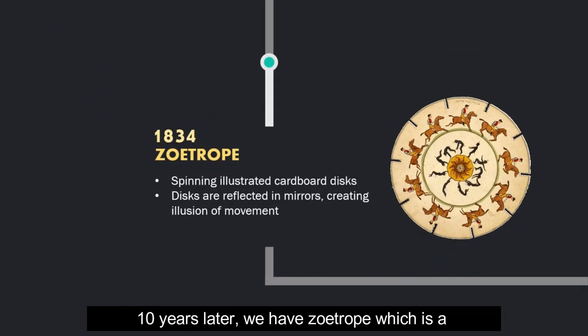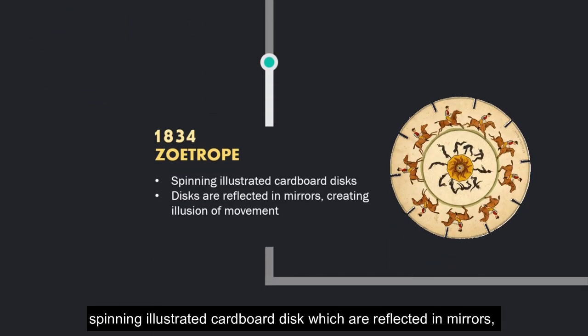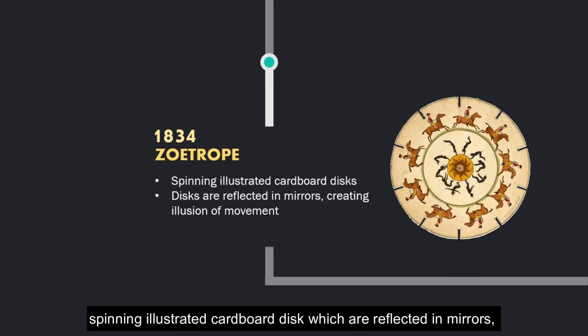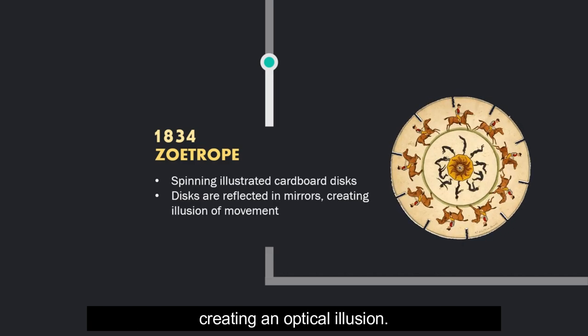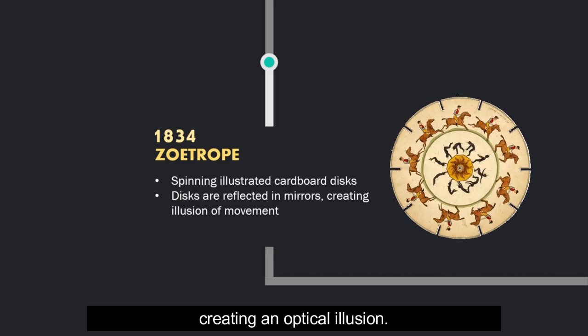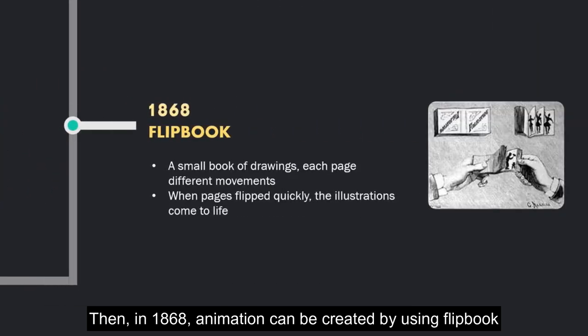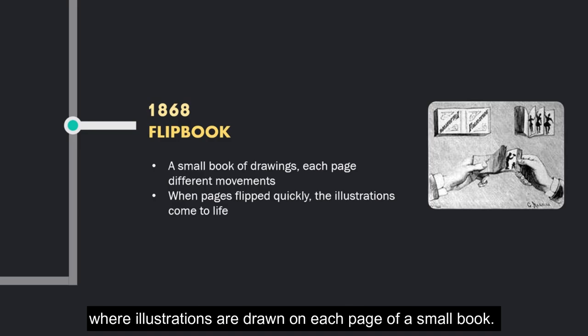Ten years later, we have the zoetrope, which is a spinning illustrated cardboard disc which are reflected in mirrors creating an optical illusion. Then, in 1868, animation can be created by using a flipbook where illustrations are drawn on each page of a small book. Drawings will appear to be moving when the pages are flipped quickly.